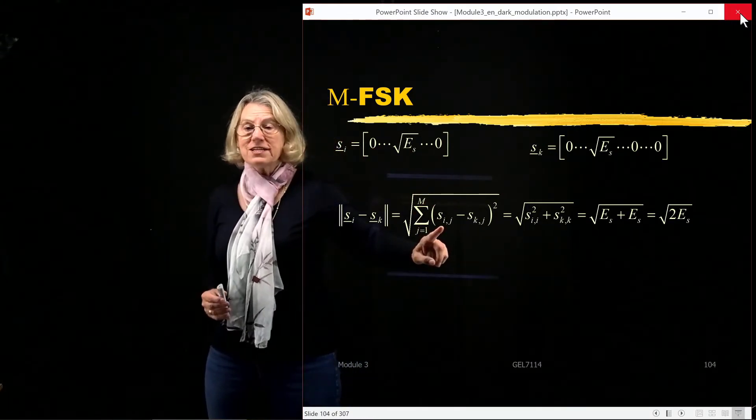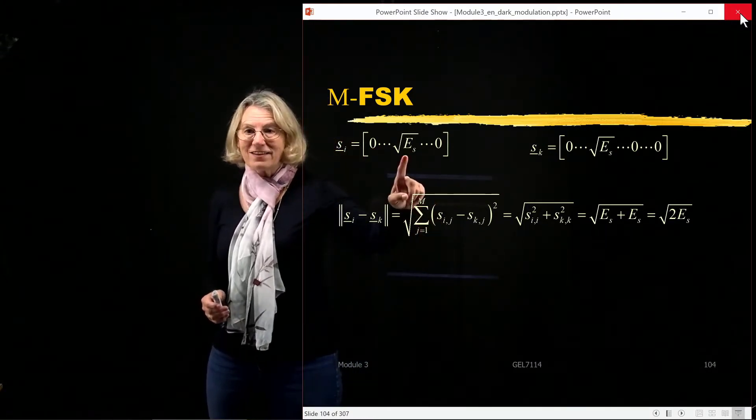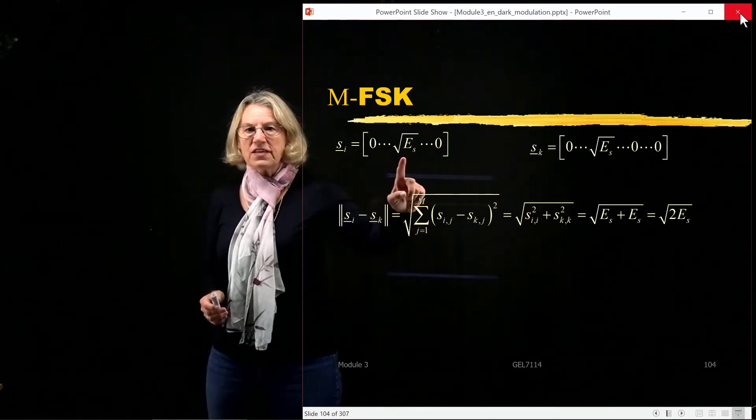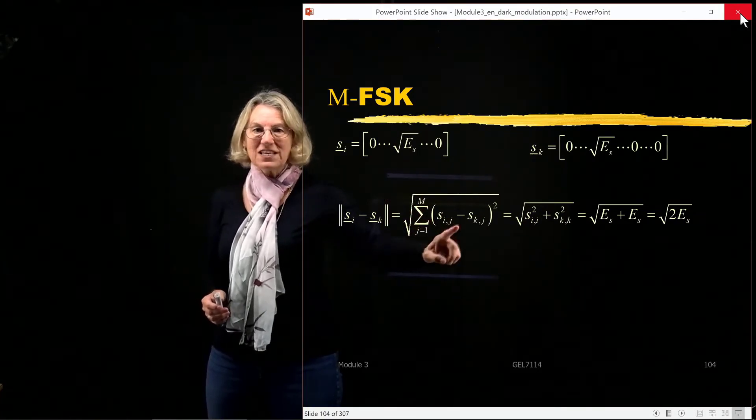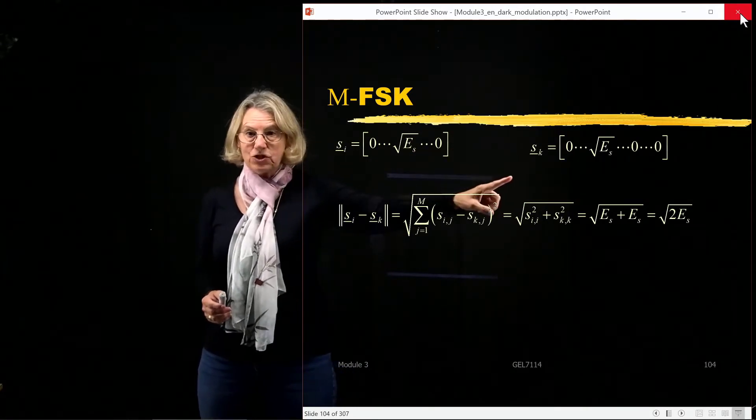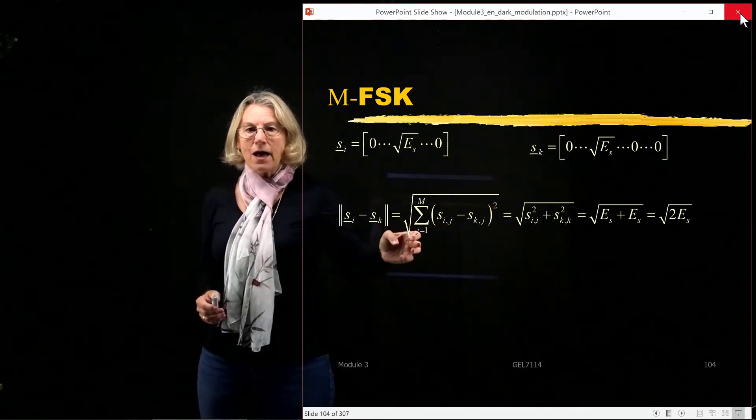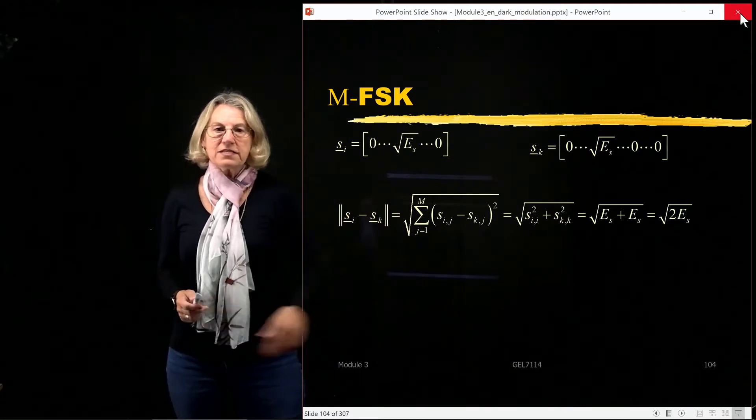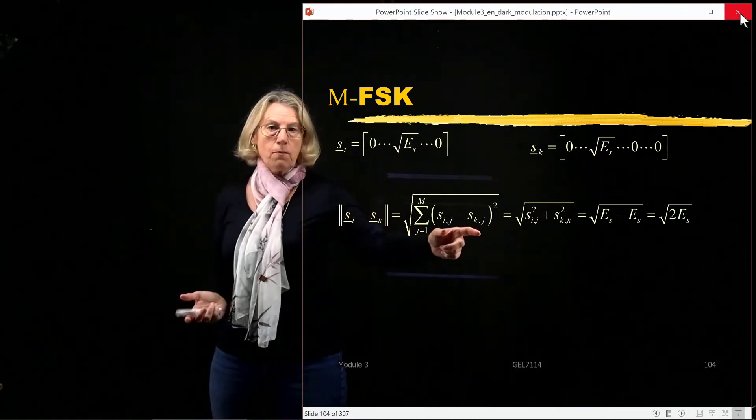And of course, they're all going to be zero except for the i-th value. And when this one is non-zero, of course, the other one will be zero because the non-zero element is different in these two. So that means that the sum of m elements is going to be mostly a bunch of zero minus zero